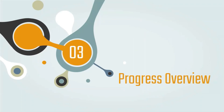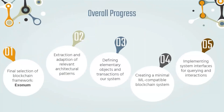Now let's give an overall view of our progress since the initial proposal presentation, which generally revolved around creating and implementing the infrastructure needed to conduct our research experiments. We started with the final selection of our blockchain framework, which was Exonym. We extracted and adapted the relevant architectural patterns found in a typical Exonym project, then defined our elementary objects including the model object and transactions, with the main transaction being the update sharing. Next, we created a minimal machine learning compatible blockchain system, which we will demonstrate at the end of this presentation, along with many interfaces to assist in querying the system.